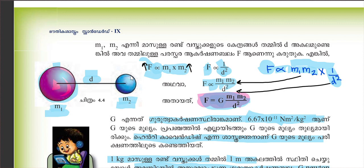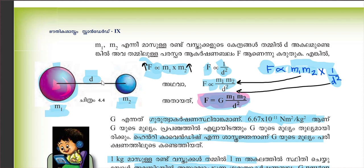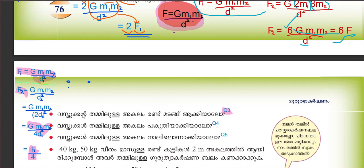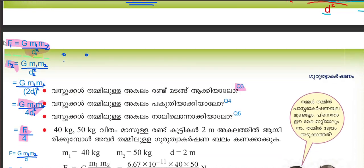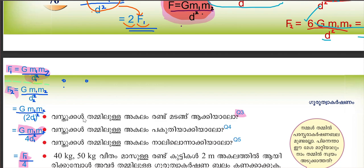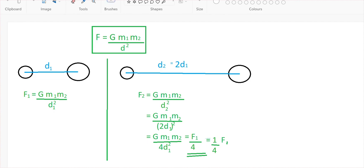The equation is: F equals G times m1 times m2 divided by d squared. This is the equation — F equals Gm1m2 by d squared.